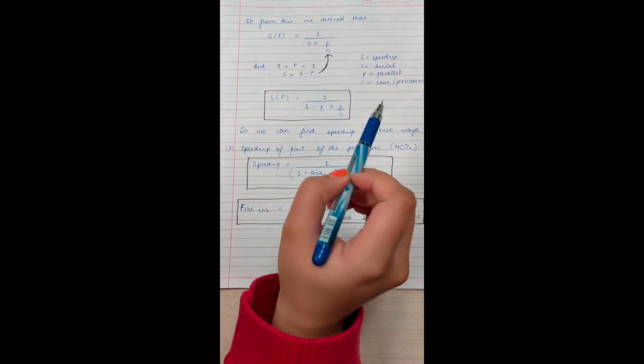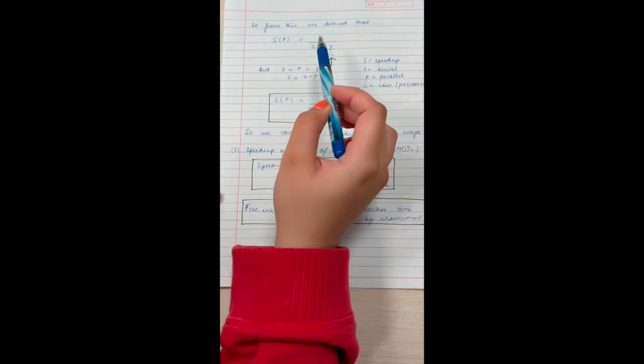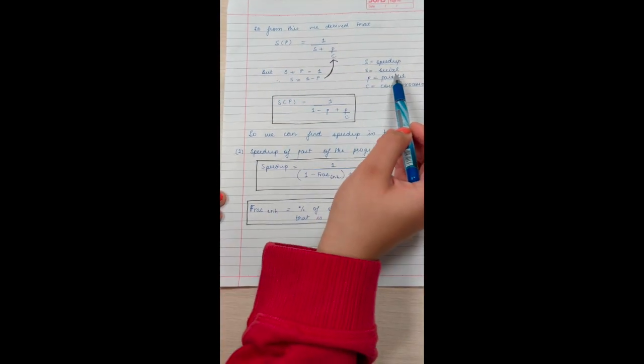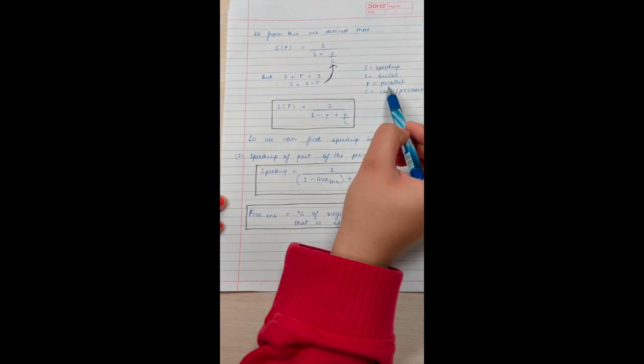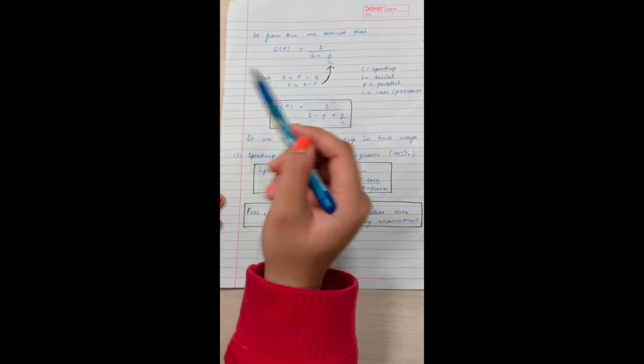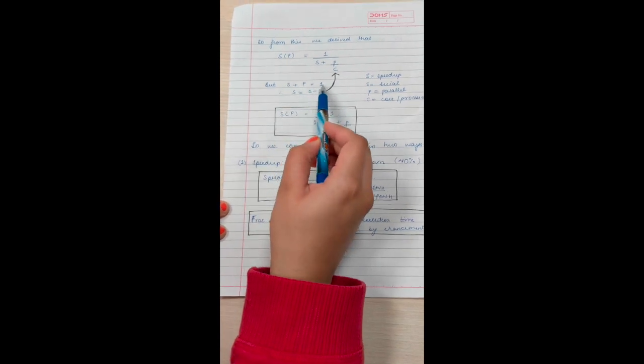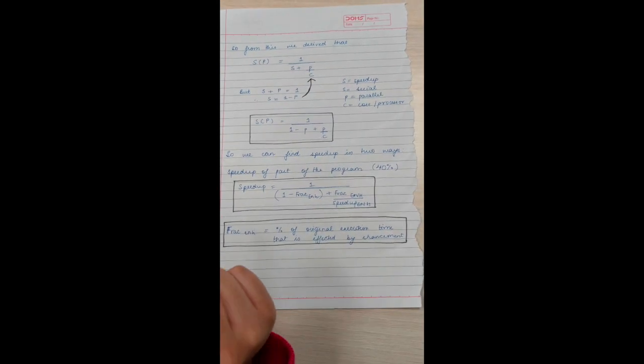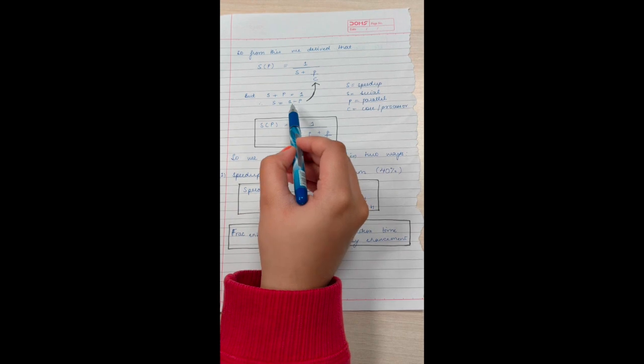From this, we derive that speed up is equal to 1 divided by (S + P/C). But we also know that S + P equals 1. So S equals 1 minus P.